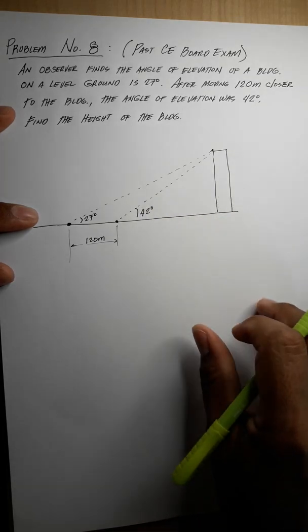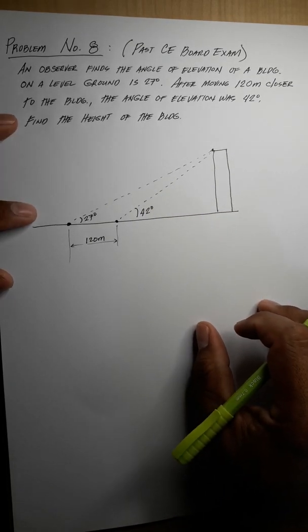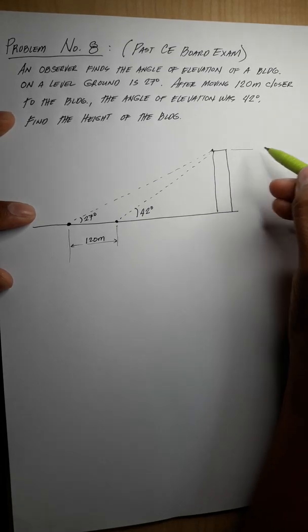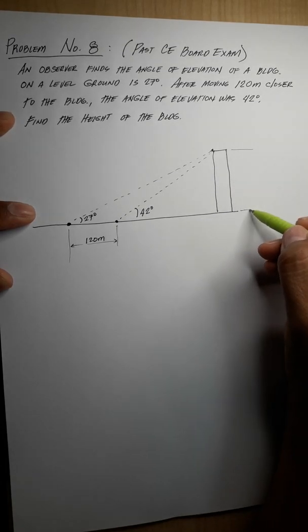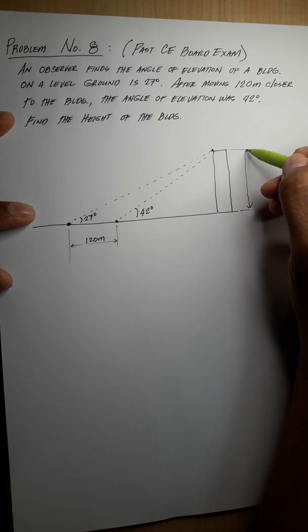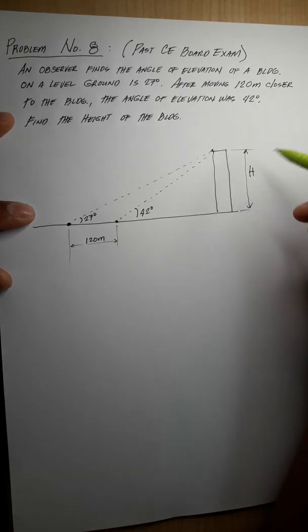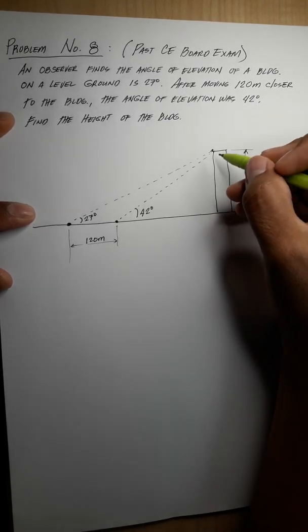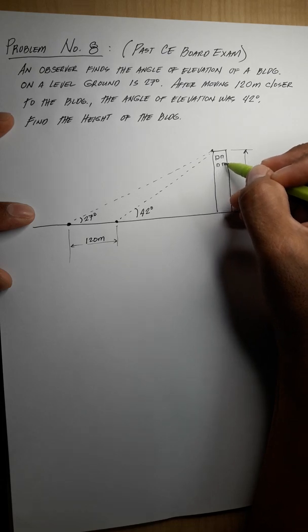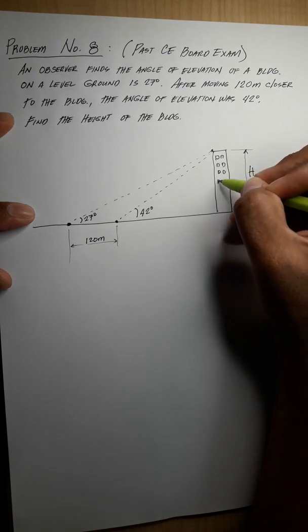The angle of elevation at the second position is 42 degrees. We are asked to find the height of the building, which we label as h.